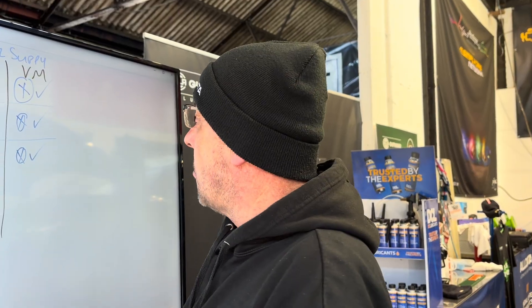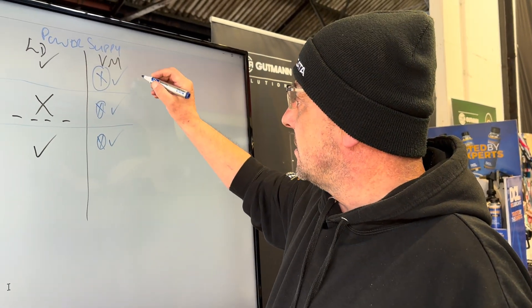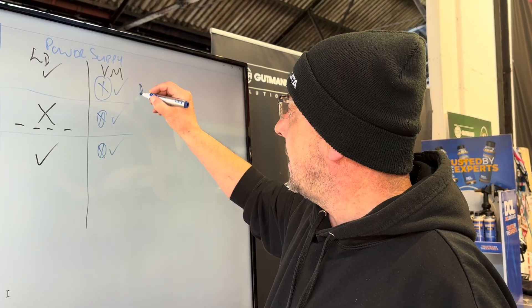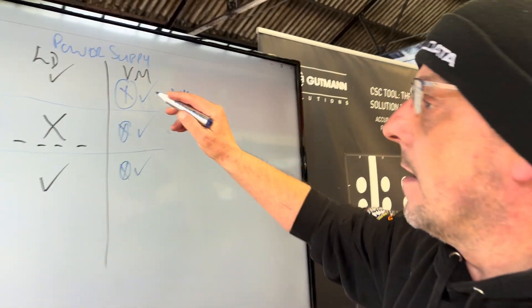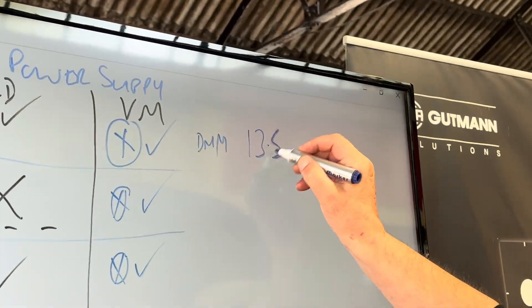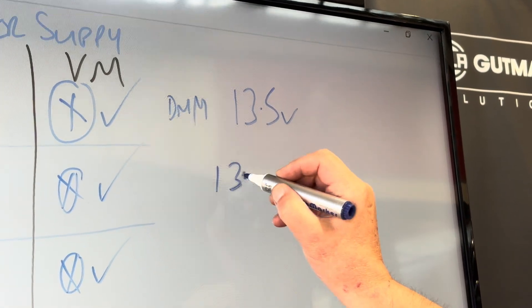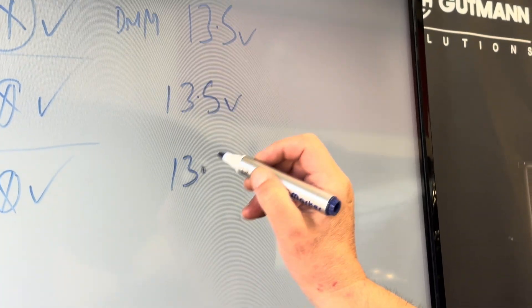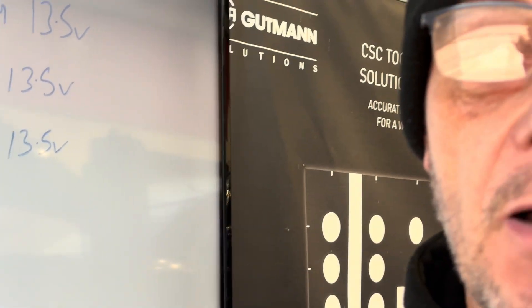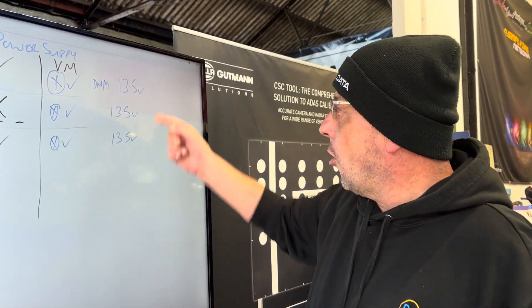If we do the voltage measurements using a live measurement with the DMM, we've got 13.5 volts on the SRS, 13.5 volts on the radar, and 13.5 volts on the lane assist camera. I've also dropped a test light onto the live feed to check that the voltage does not drop when I put a load on the wire - they're all perfectly capable of carrying the load.